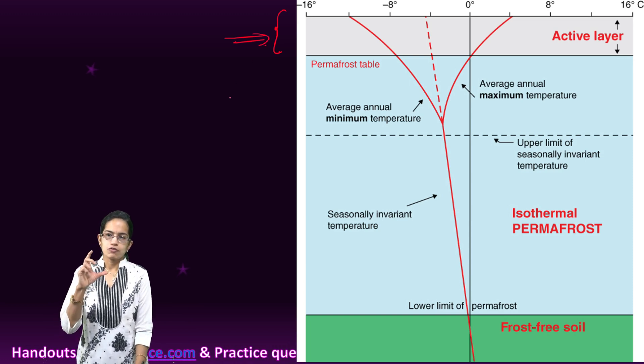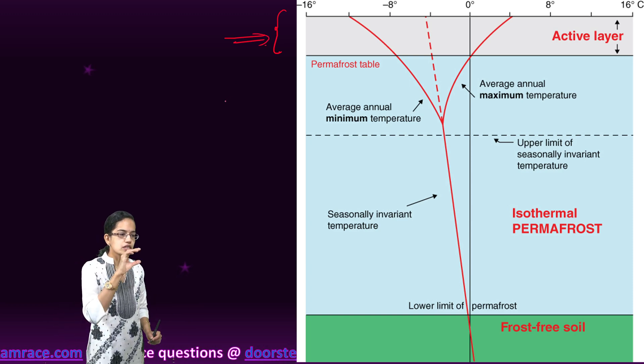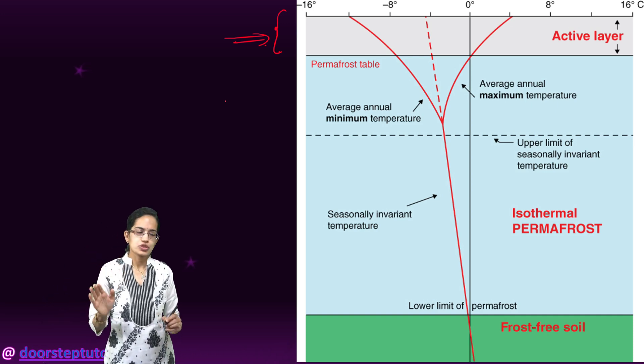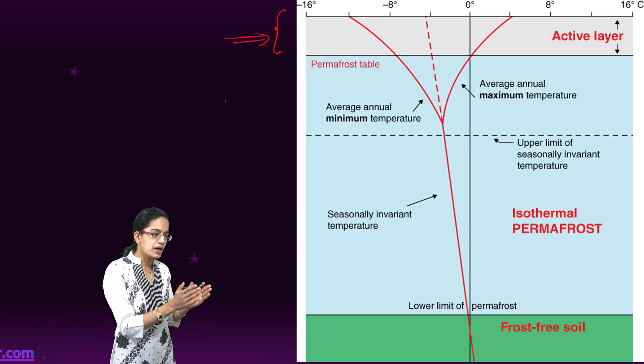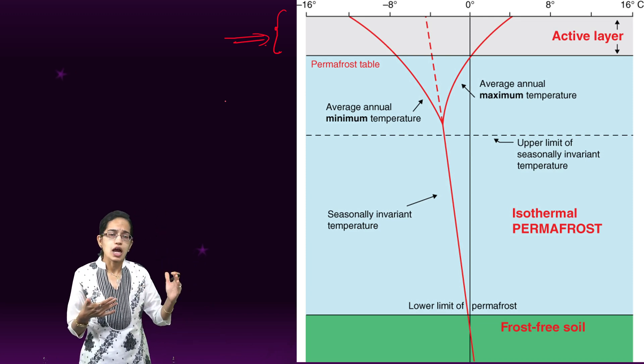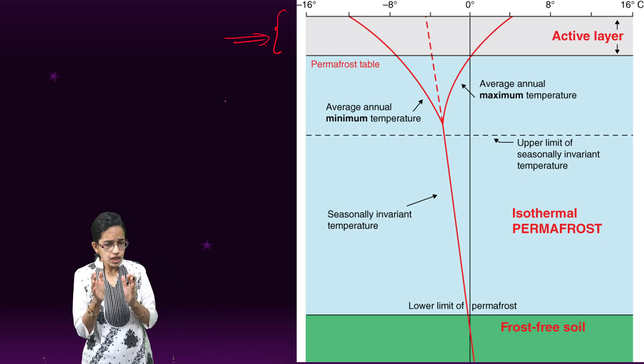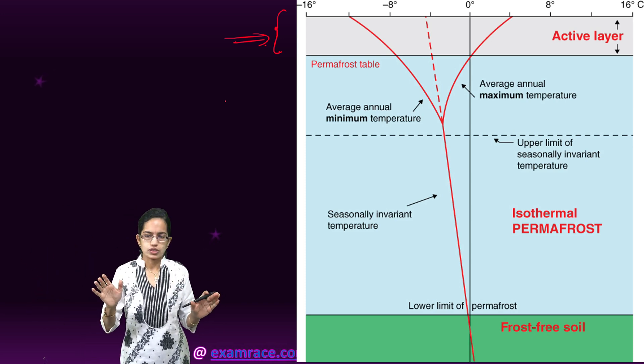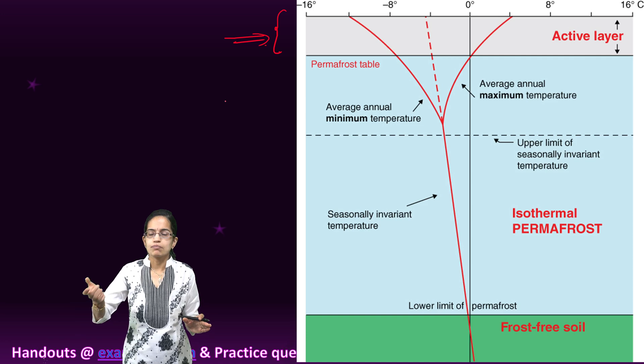The active permafrost is the topmost layer which does not stay frozen throughout the year. During the warm months it melts and during the winter months it starts to freeze again. However, in extremely cold areas, it rarely thaws or melts.